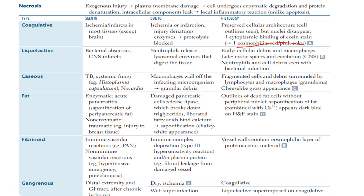In liquefactive necrosis, there is bacterial abscess or CNS infarcts. An infarct is basically the area where there is focal necrosis. This type is caused by neutrophil lysosomal enzymes that digest the tissues. Early findings include cellular debris and macrophages; late findings include cystic spaces and cavitation. Neutrophilic cell debris is seen in bacterial infection.